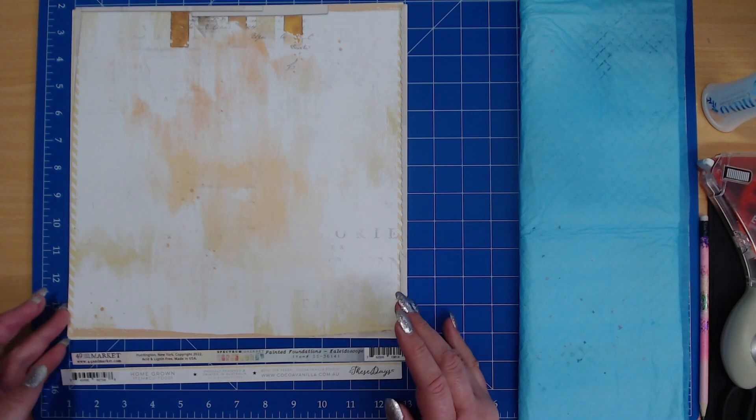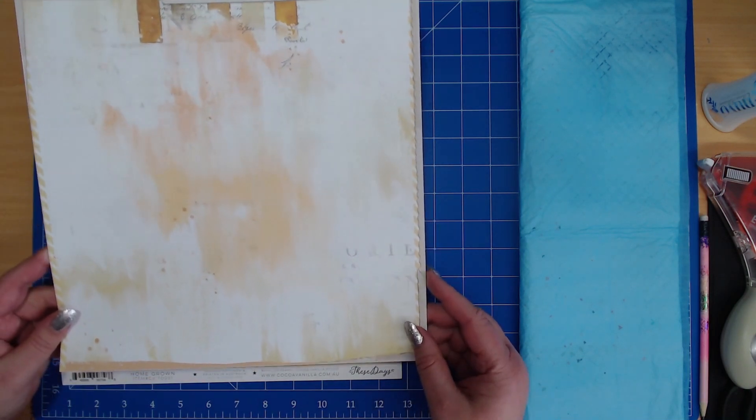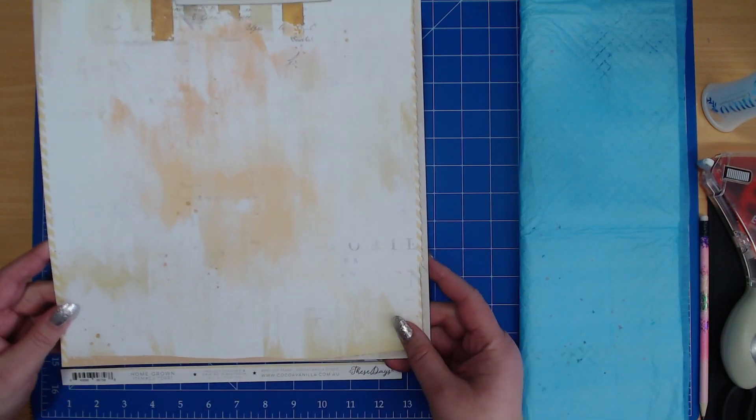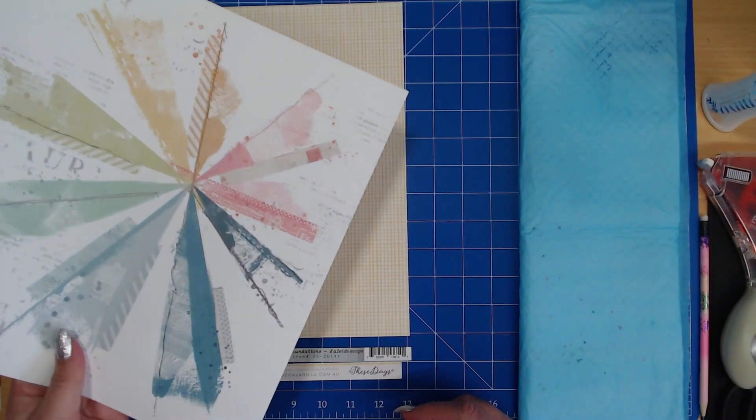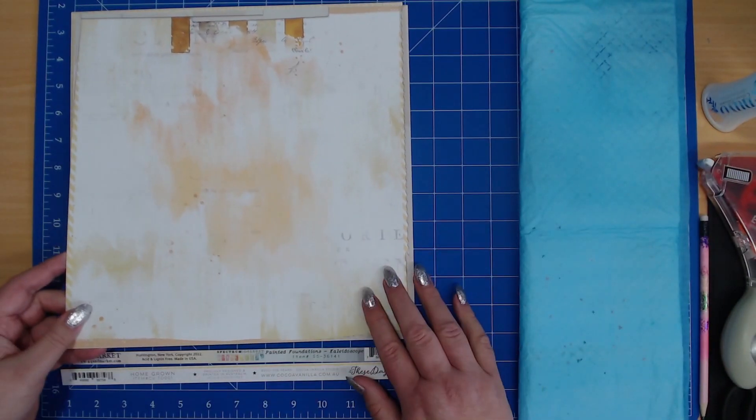The papers I've chosen to use today is this 49 and Market Spectrum Sherbet painted foundations and this particular page is called Kaleidoscope. I think I've got two of everything, three of everything from that collection.